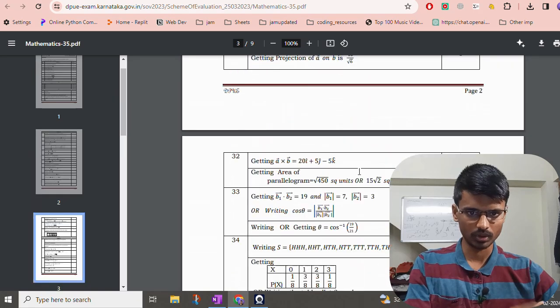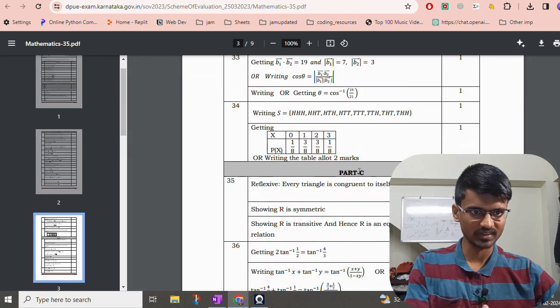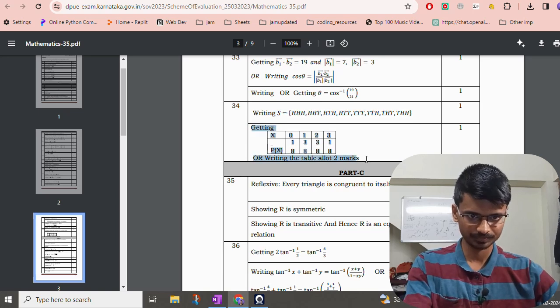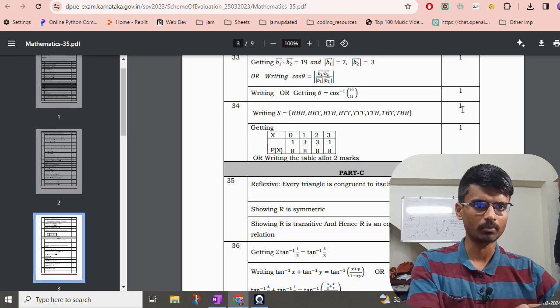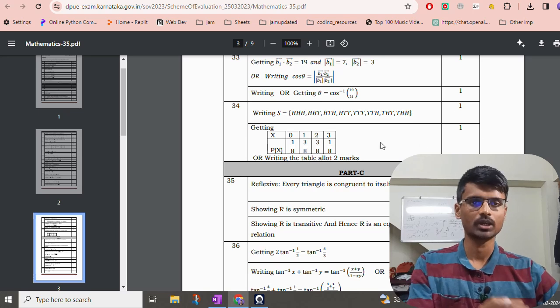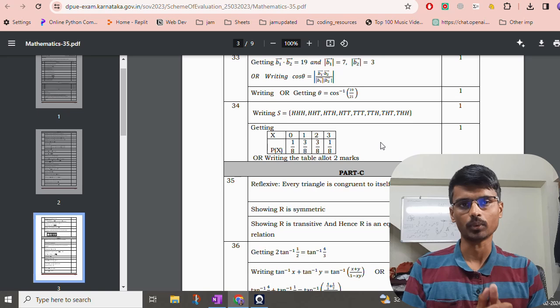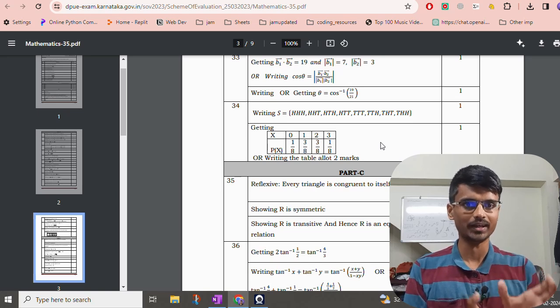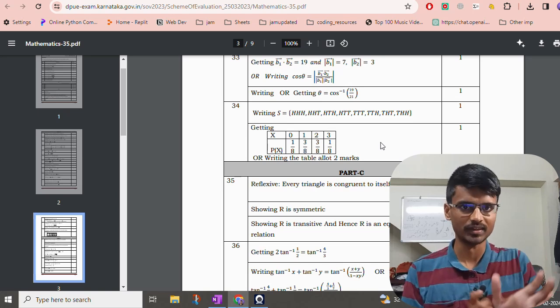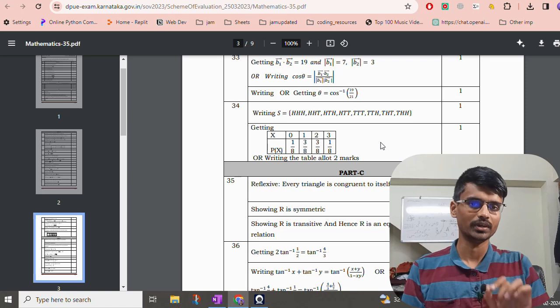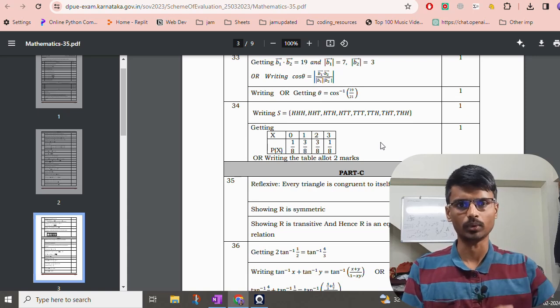And we will see more answers. As you can see here, this is a two mark question. First, he has written the sample space and then he has written the table, the distribution table. There is one mark for this step and one mark for this step. Teacher has got no right to cut the marks on his own. If the student has written whatever is mentioned in the answer key, the teacher has to give the marks. Teacher cannot cut on his own.